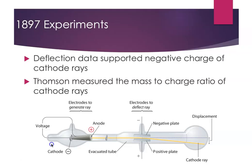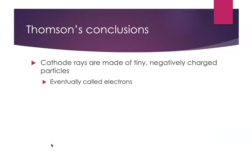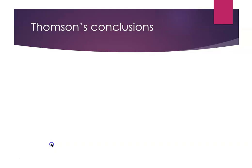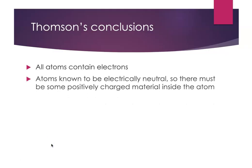Thomson concluded that cathode rays are made of tiny negatively charged particles, and eventually they settled on the term electrons for these particles. He had just discovered the electron. Moving forward from what Dalton had said — that atoms are indivisible — we now have subatomic particles. He reasoned that all atoms must contain electrons, since cathode ray tubes can be built with almost any metal. And since atoms are electrically neutral, if they contain electrons there must be something positive inside them.